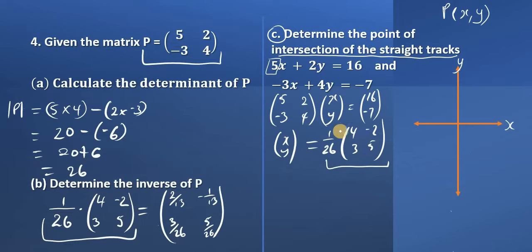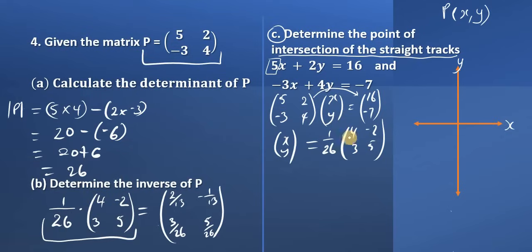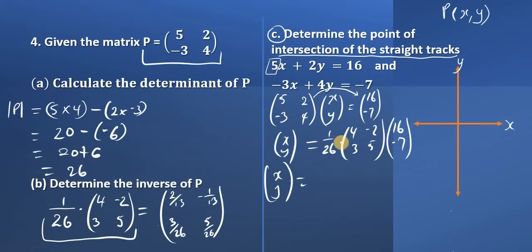So matrix P is really matrix A in terms of the formula Ax equals B. When we transpose the A matrix it becomes A inverse, which is 1 over the determinant times the adjoint — which is what we have here. Then we multiply it by the B matrix, which is the matrix with 16 and negative 7 as components. So we put back 1 over 26 and multiply row by column.